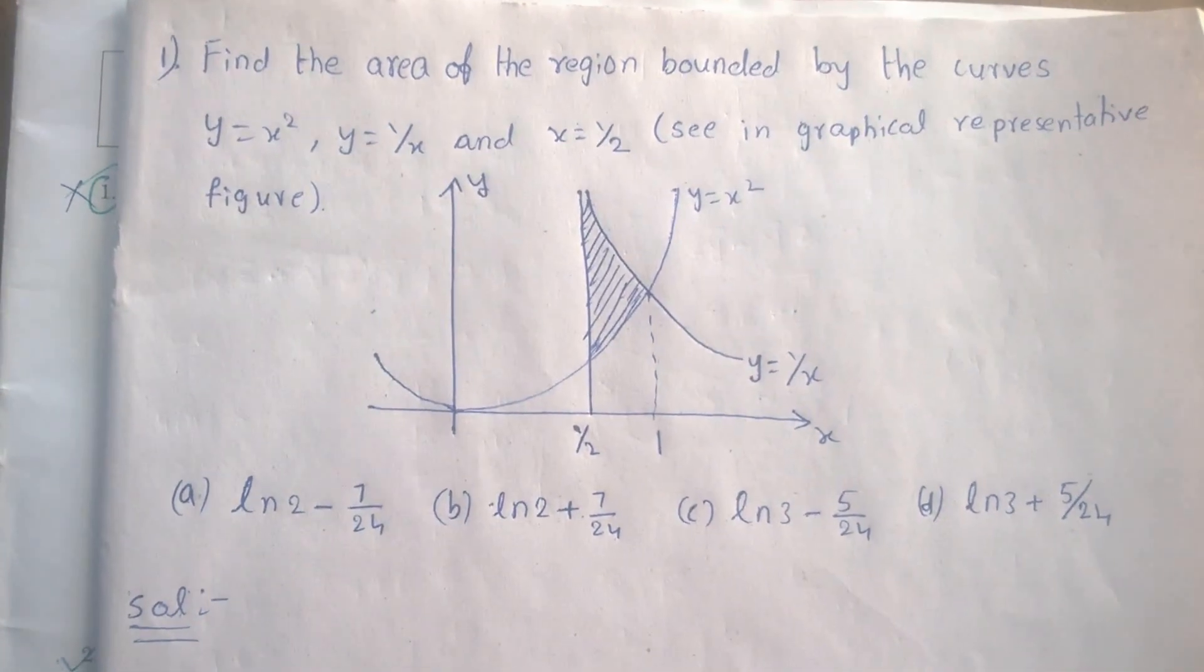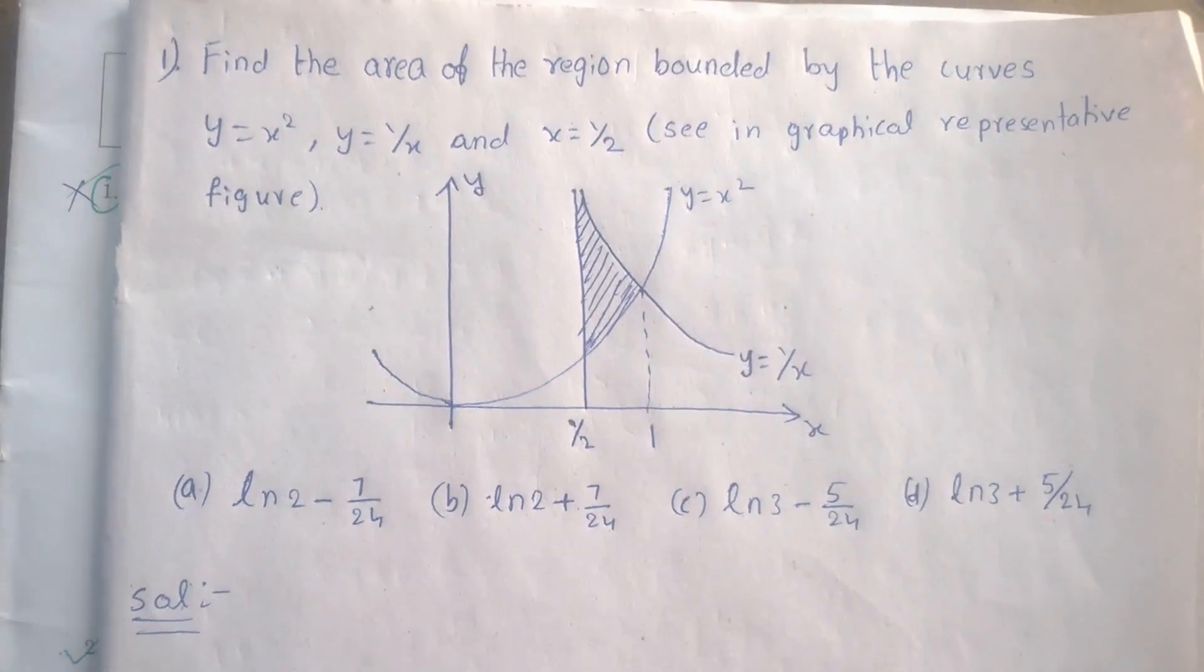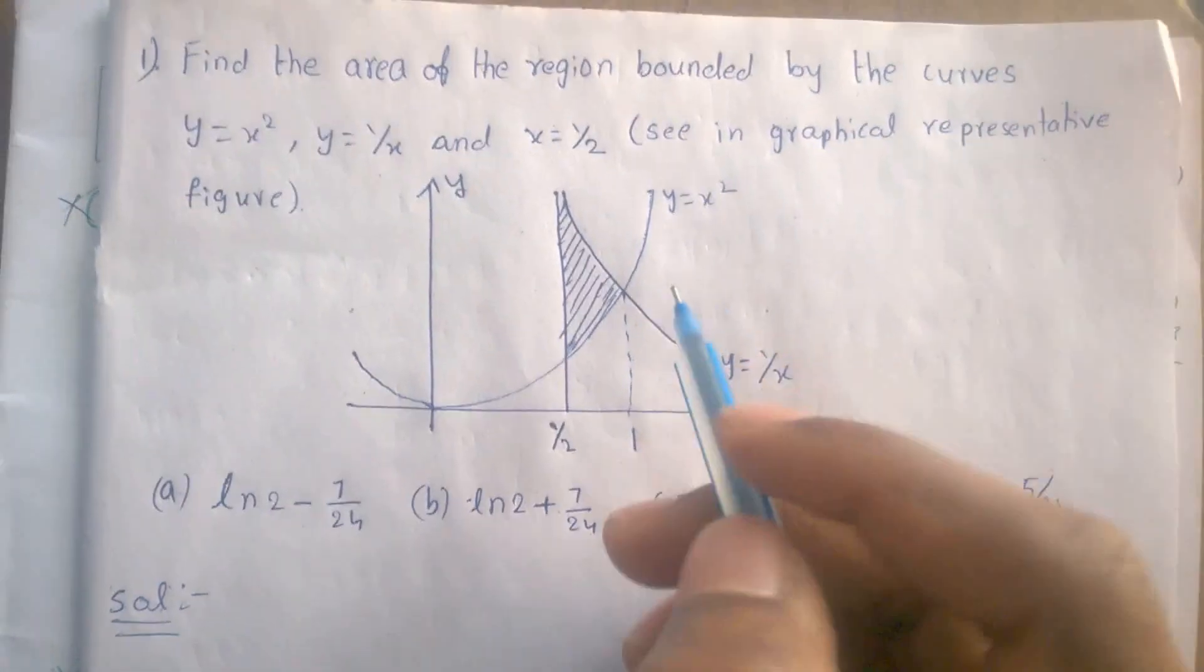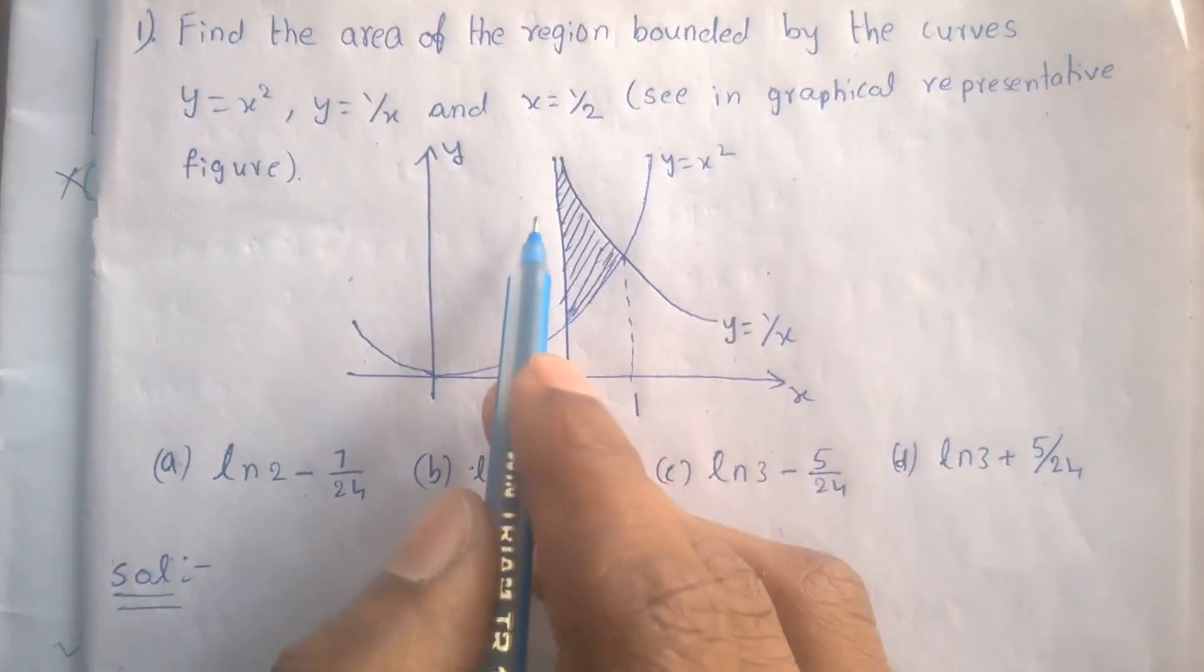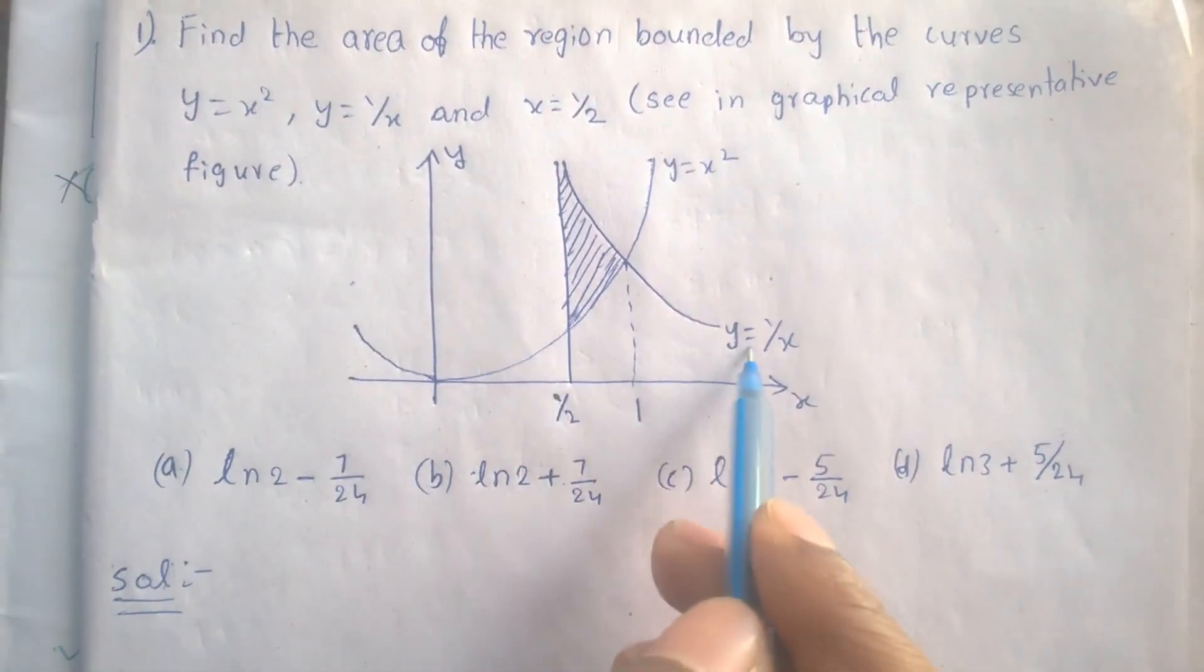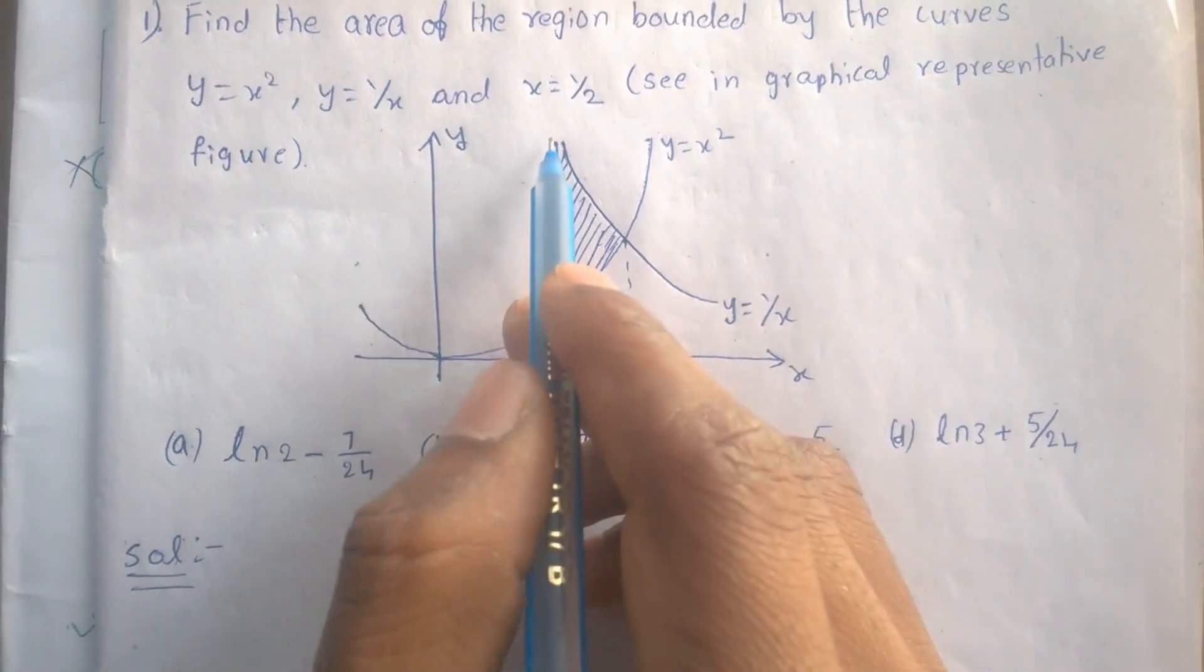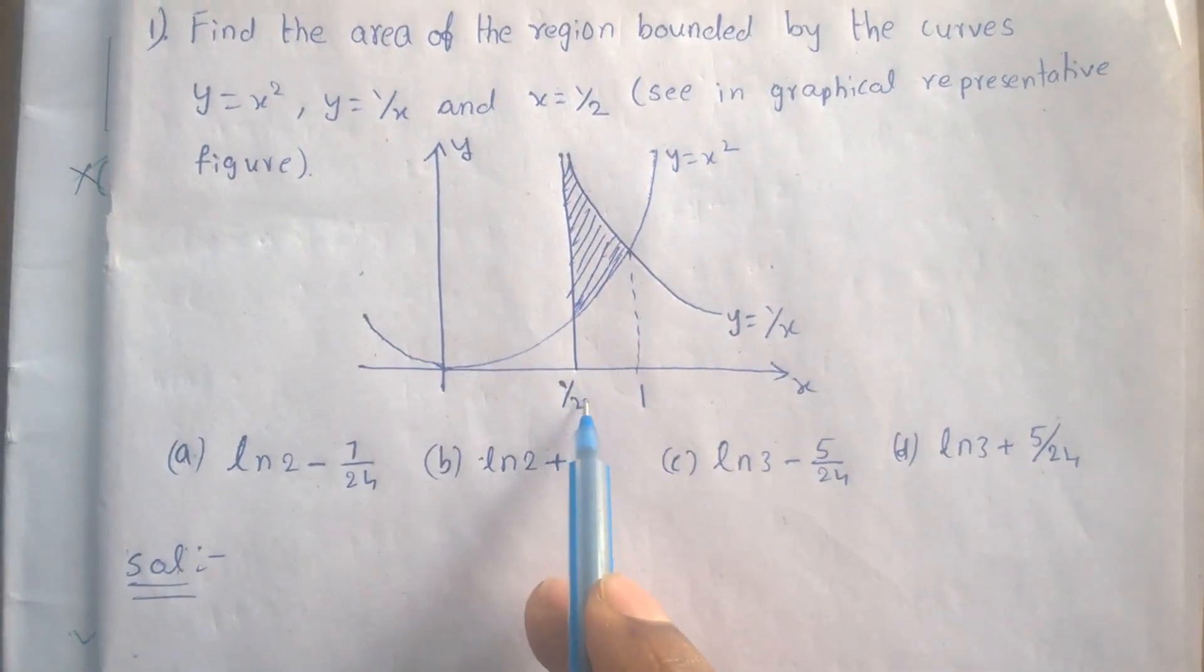The graph is given here and we have to find the region obtained by these curves. Here this is y equals x square, this is y equals 1 by x, and this straight line is x equals 1 by 2.